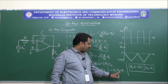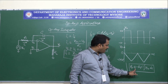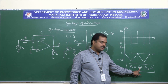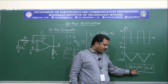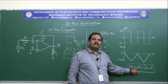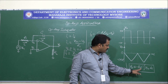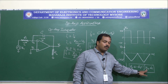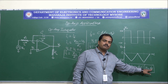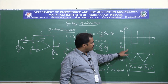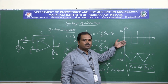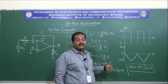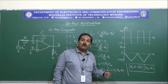So what we have is a gain given by R1 into C, a negative sign indicating the out-of-phase signal, and the integration of VIN with respect to time. The same is shown in the output waveform with respect to the inputs. This is the working of the integrator circuit.